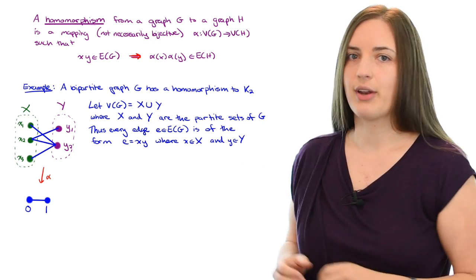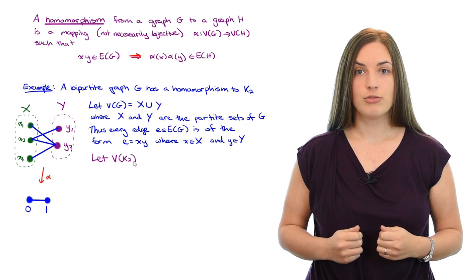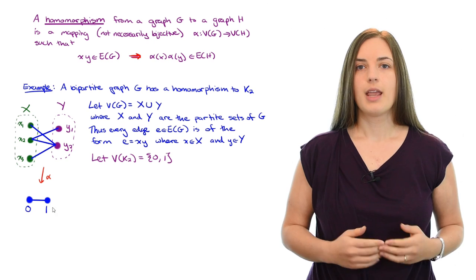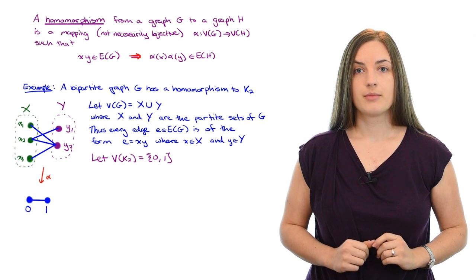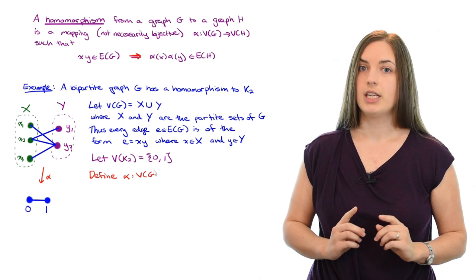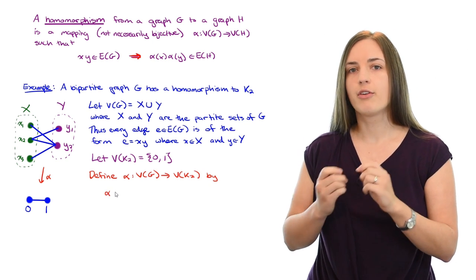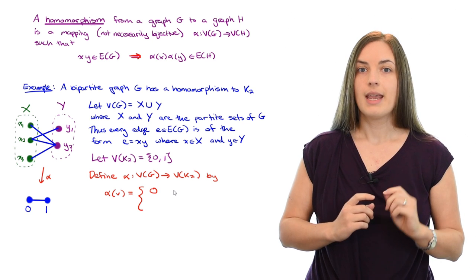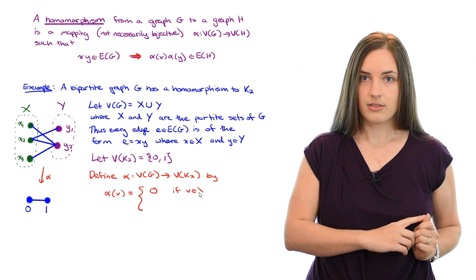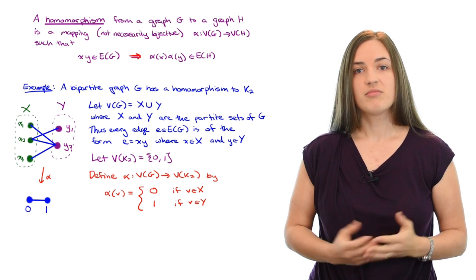Now as I mentioned, we're going to label the vertex set of K2 as 0 and 1. And now we're ready to define alpha. So we'll define alpha a mapping from the vertex set of G to the vertex set of K2 as follows. Alpha of a vertex V will equal 0 if V belongs to X, and it will equal 1 if V belongs to Y. That simple.